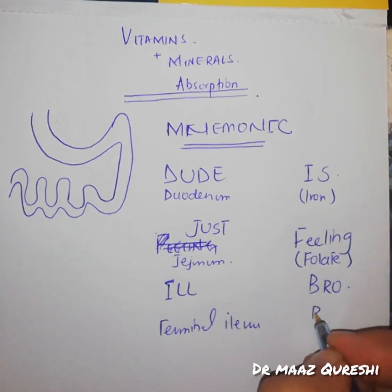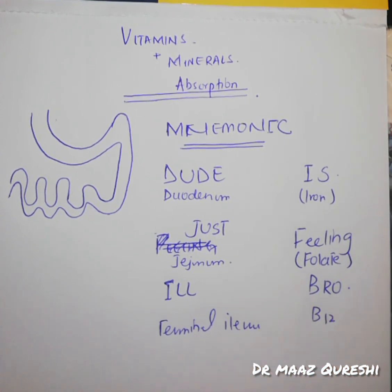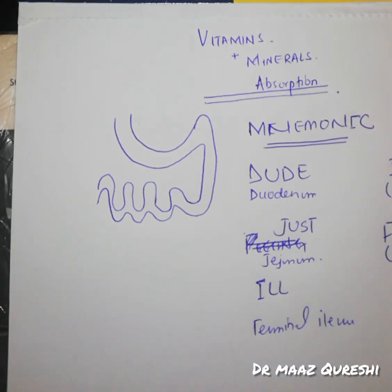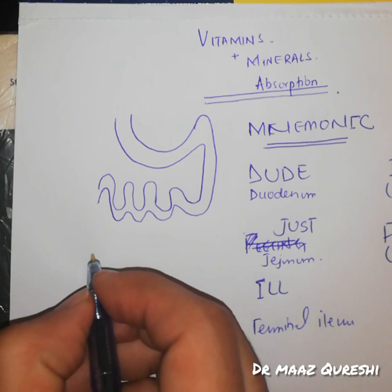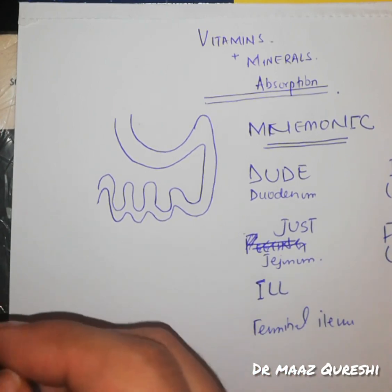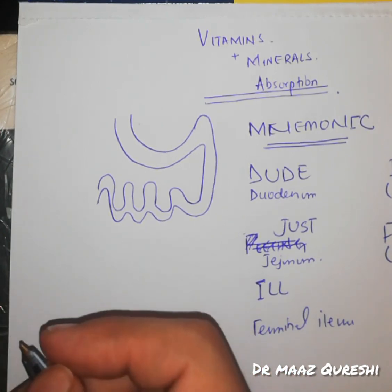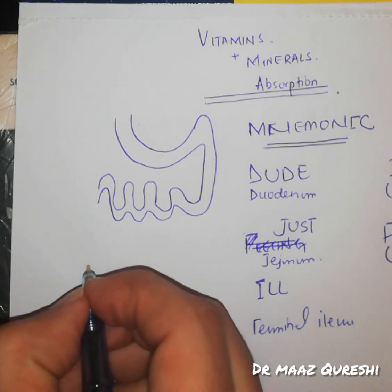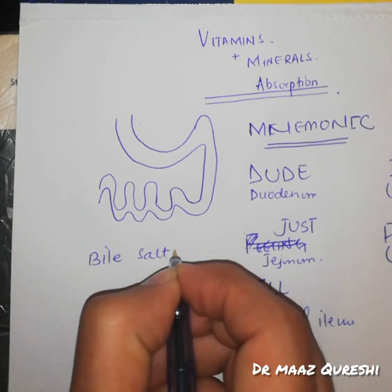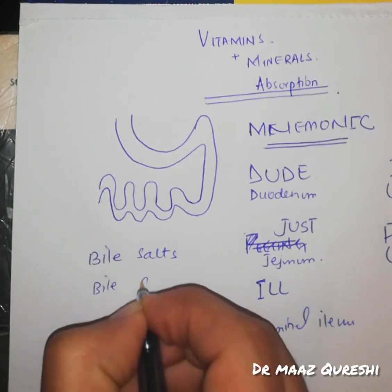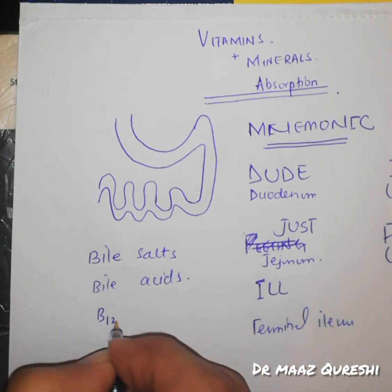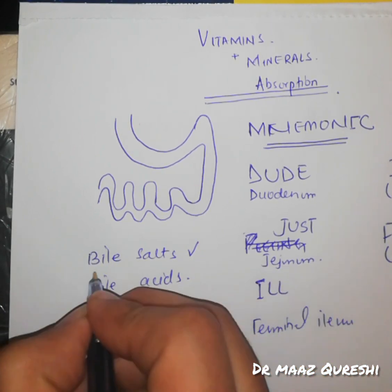I is for terminal ileum. B is for vitamin B12, and there is a controversy here about what is more absorbed in the terminal ileum. The options are bile salts, bile acids, or B12. Always mark bile salts on the top.